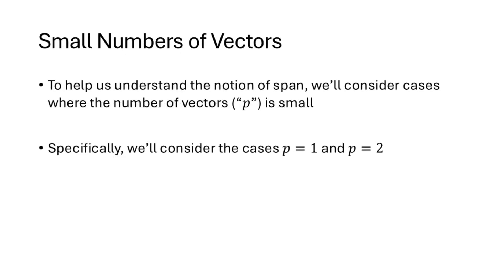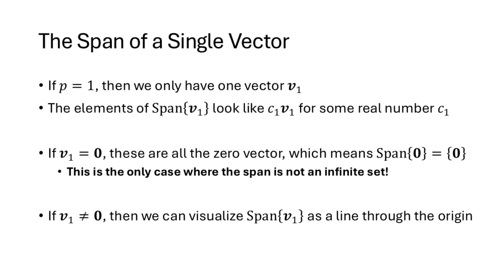To better understand span, let's consider small cases. With p = 1, the span of {v1} consists of all scalar multiples c1·v1. If v1 is the zero vector, the span contains only the zero vector — this is the only case where span is not an infinite set. If v1 is any nonzero vector, the span can be visualized as a line through the origin.